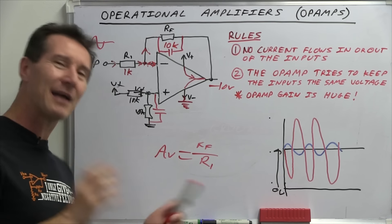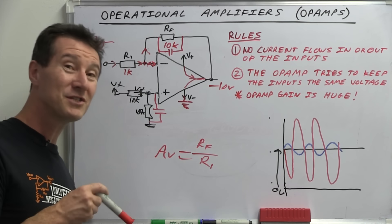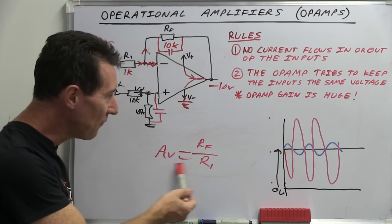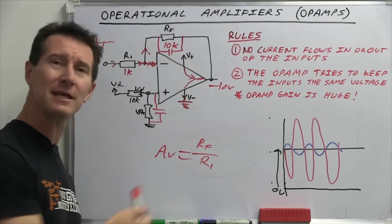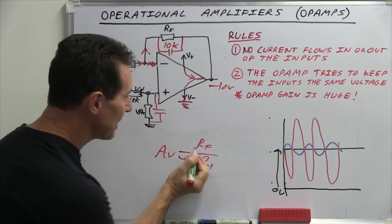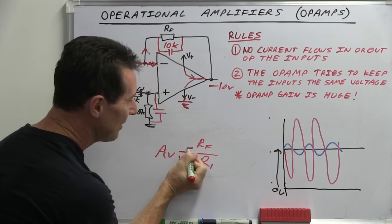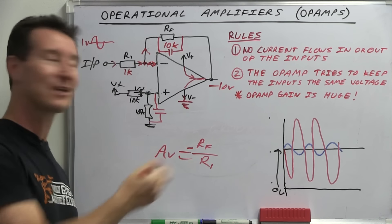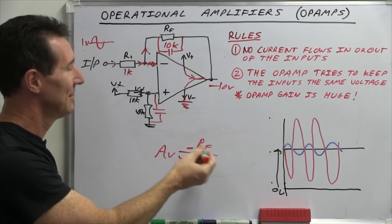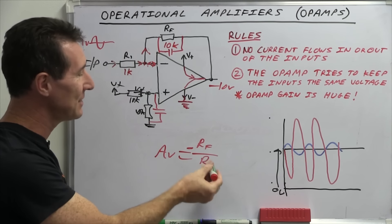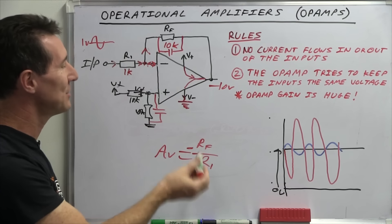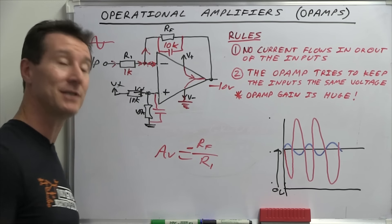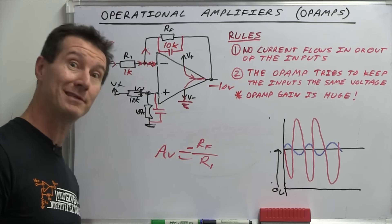One little mistake I noticed — my formula for the inverting amplifier needs a negative in front of it because the gain is actually negative. So the gain is not 10 in this case, it's minus 10.